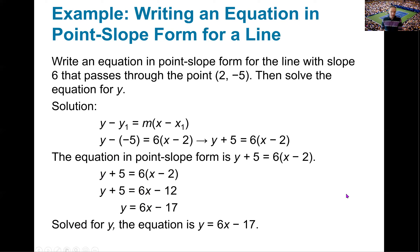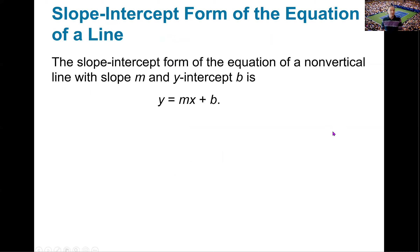The slope-intercept form of an equation is when it's solved for y. Whenever it's solved for y, the coefficient of x is your slope, and we call the other term the y-intercept — typically referred to with the letter b, meaning that's where it's crossing the y-axis. It doesn't have to be in the form mx plus b; it could be b plus mx. You just have to recognize that whatever the coefficient of x is is your slope, and the constant is your y-intercept when the equation is solved for y.